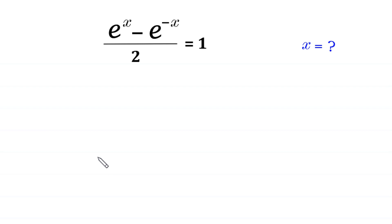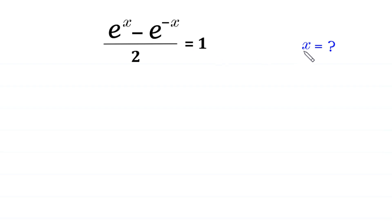Hello, welcome to how to solve this very nice exponential equation. The equation is: e to the power x minus e to the power negative x, divided by 2, is equal to 1. We need to find all possible values of x.